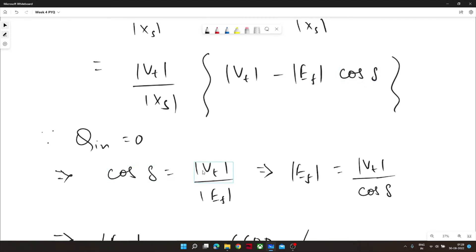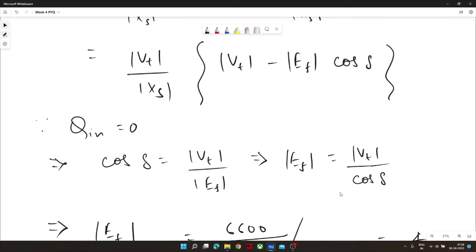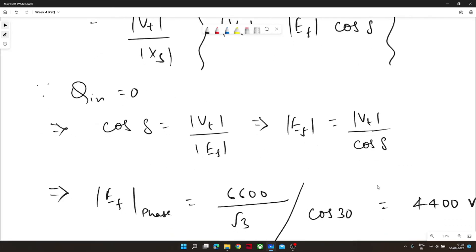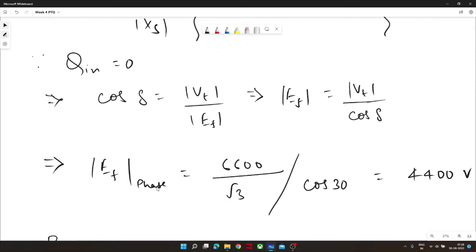So cos delta is nothing but mod of V_t divided by E_f and we need to calculate E_f. We know V_t, we know cos delta so we calculated E_f. After putting the phase value of V_t I will get phase value of E_f excitation emf that would come out to be 4400 volt.